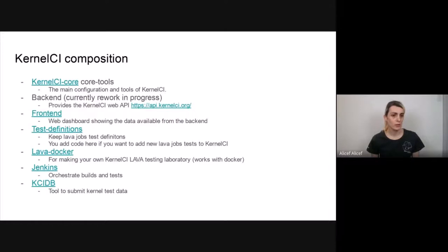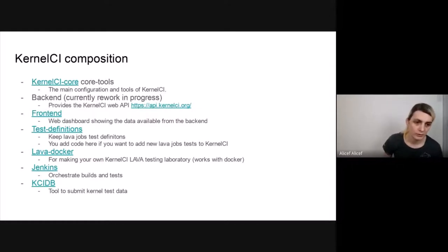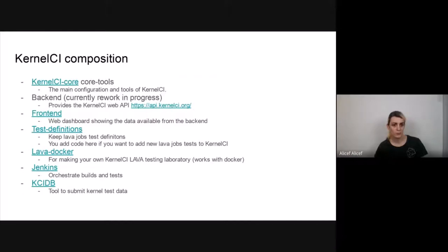Currently we are making a new KernelCI API. The old KernelCI API can be seen at the api.kernelci.org website, and we will continue to support the old KernelCI API in the meantime. We also have a frontend — the KernelCI web dashboard — that shows all the data available from the KernelCI backend.